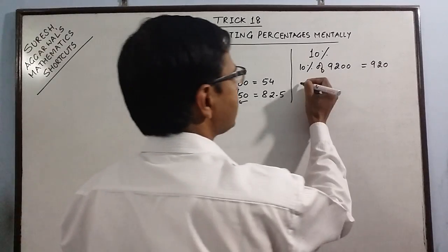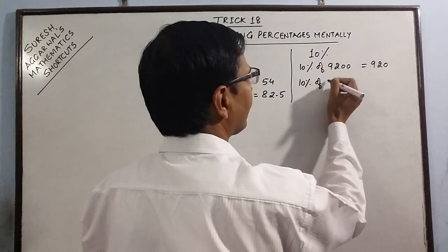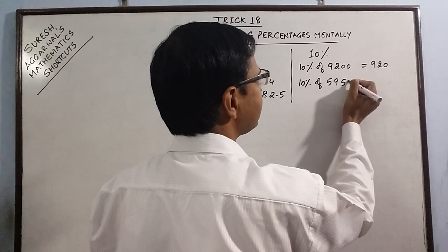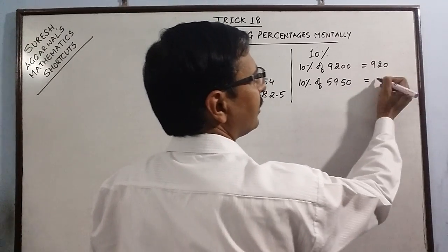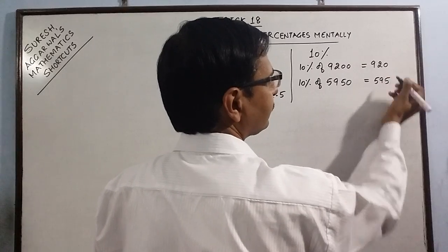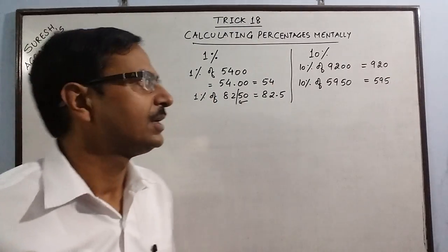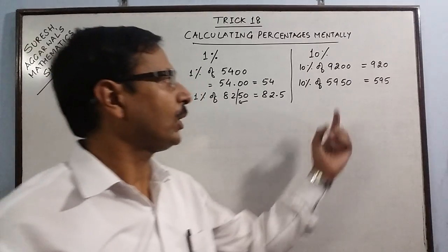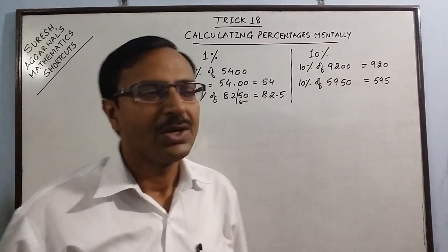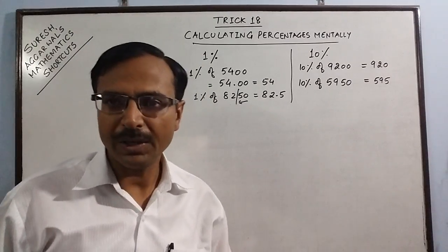One more example, say 10% of 5950, just put a decimal after 5, so 595. So leave one digit and put one decimal after one digit from the right. So these are the two concepts which you have to remember.